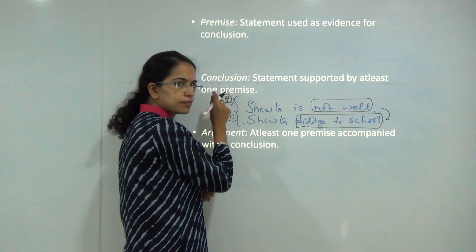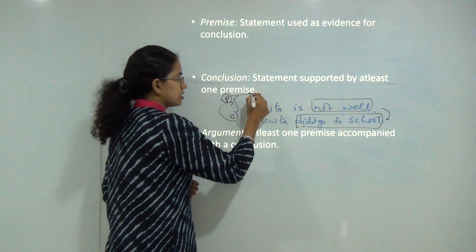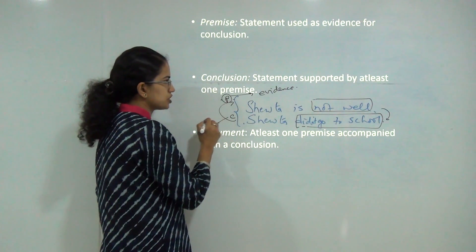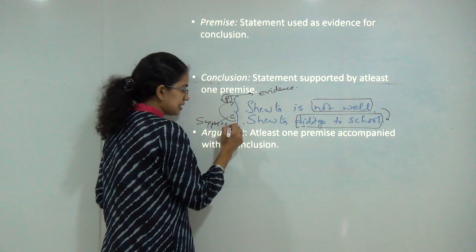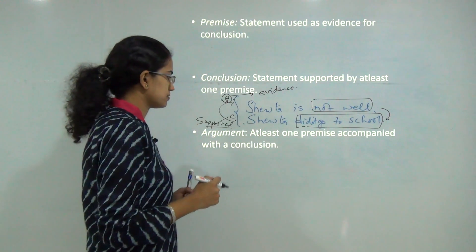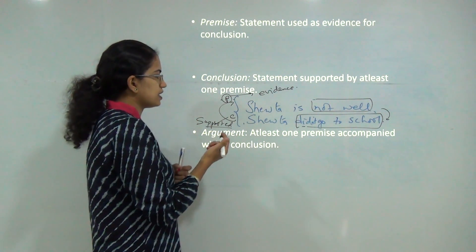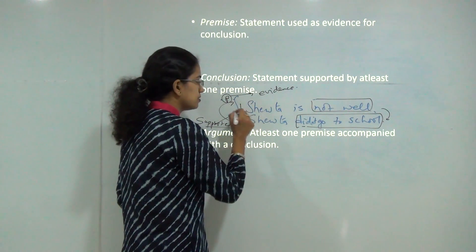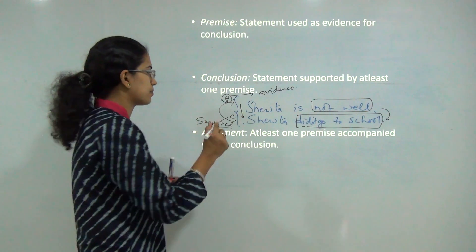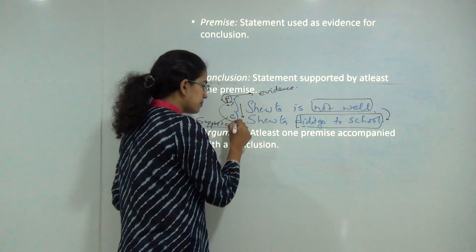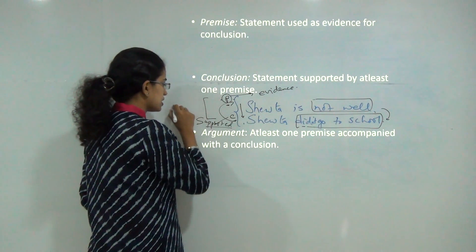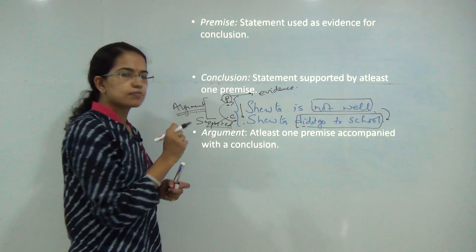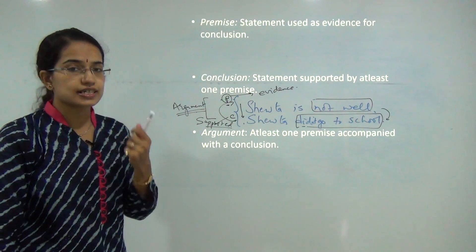Premise provides evidence for a conclusion, while a conclusion is supported by at least one or more premises. And what is an argument? Whenever I have one premise accompanied by a conclusion — at least a minimum of one premise accompanied by a conclusion — then I can say this is an argument. To understand argument, it is very important that you have a premise and a conclusion.